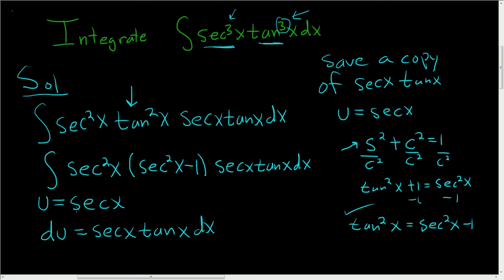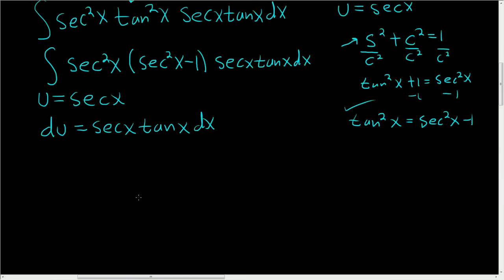Alright, so now we're ready to make the substitution. It should be a pretty easy problem now. So u is secant. So this piece here will become u squared. This piece here will become u squared minus 1. And this piece here will be our du, right? It's right here. du.